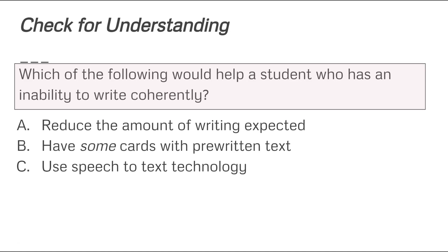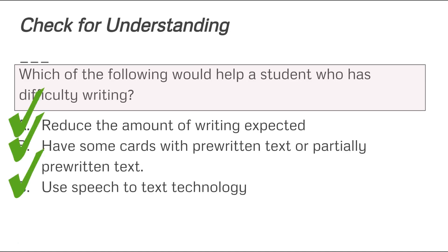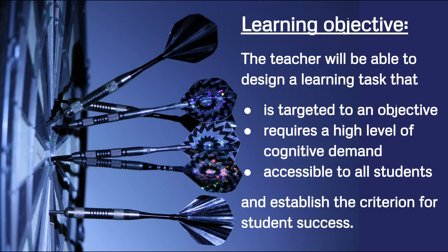Which of the following would help a student who has dysgraphia, or an inability to write coherently? Look at the instructional supports listed here and determine which would help a student with severe difficulties with writing. The answer is actually all of them. In order for a student with this learning disability to complete the learning task, we must relieve the brain of the arduous effort it takes to write so that it may focus on the new learning. If all the student's cognitive energies are channeled into the excruciating process of creating letters on paper, it cannot focus on the product.